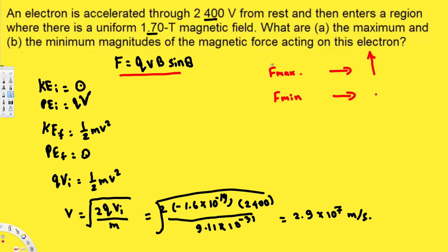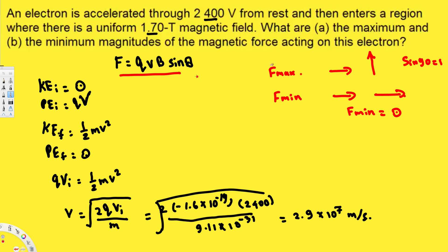The force is minimum when the velocity and magnetic field are in the same line — at 0 degrees or 180 degrees. Since sin(0°) = 0, the minimum force F_min = 0. For the maximum, sin(90°) = 1, so we don't even need to include that in the equation since multiplying by one changes nothing.